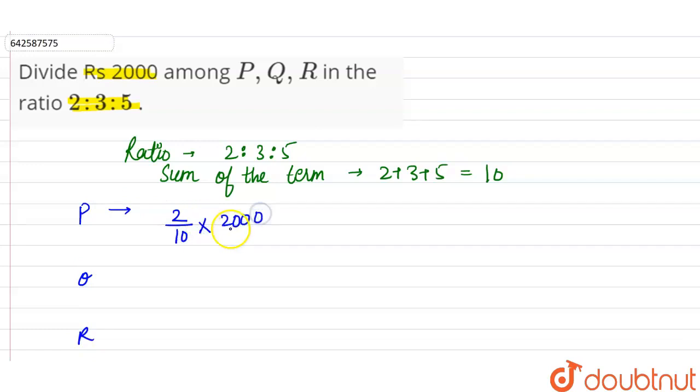Q's share is 3 out of sum is 10, which is total money is 2000. So Q's share is 3 by 10 into 2000.